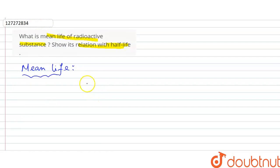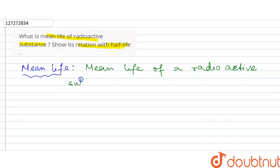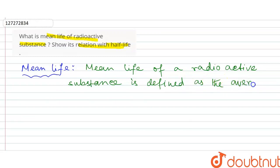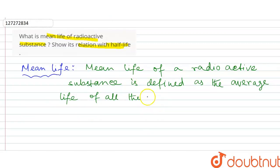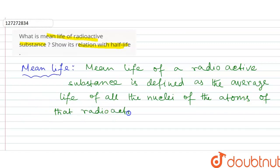Mean life of a radioactive substance is defined as the average life of all the nuclei of all the atoms of that radioactive substance.